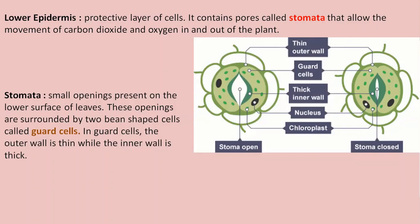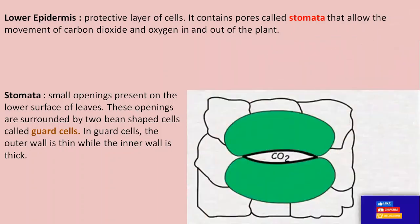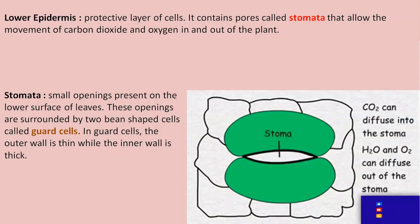During the daytime, in the presence of sunlight, water moves into the guard cells making them swell up. As they swell up, their outer thin wall bulges outward, as a result of which the inner walls move apart from each other — this results in the opening of the stomata.